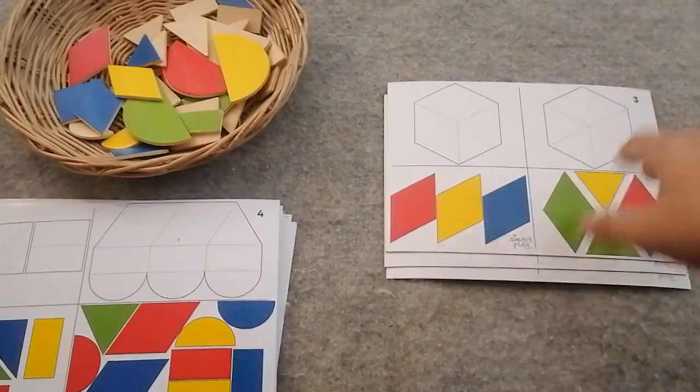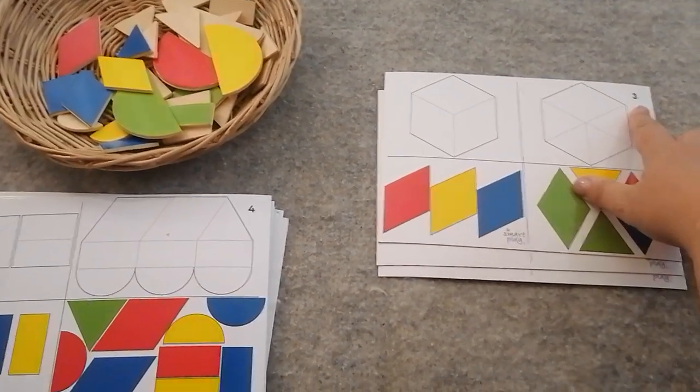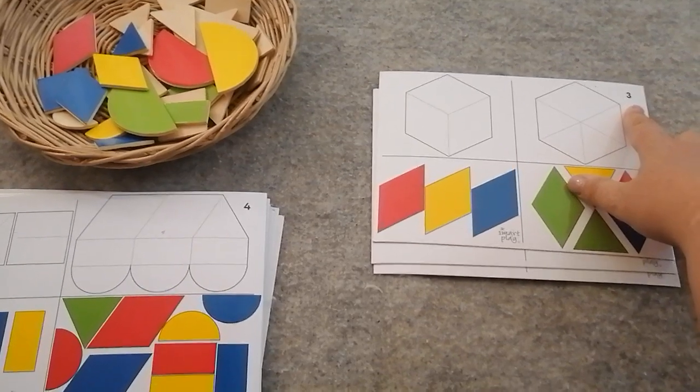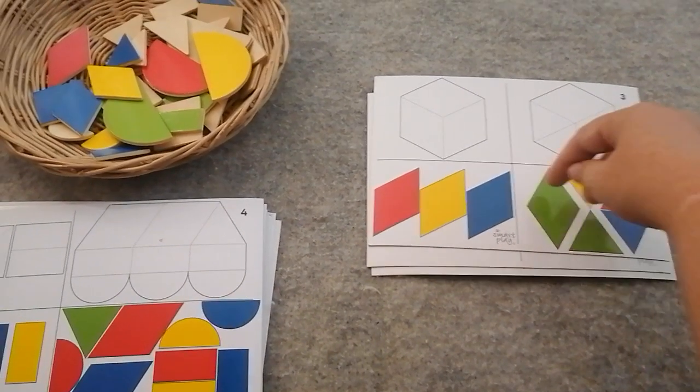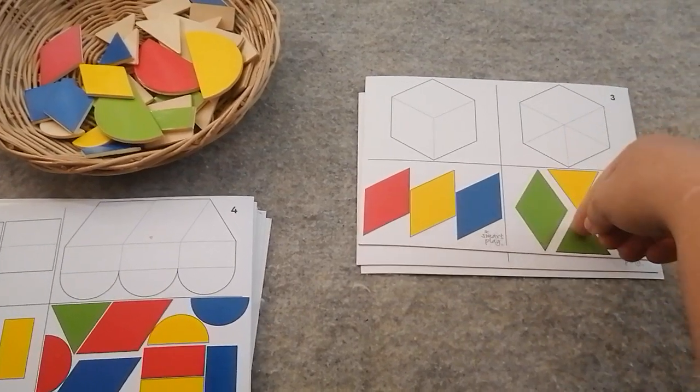Here's our tangram game again. Today we're doing card number three. Now I'm not going to be able to do card number three because my green diamond and my green triangle are missing from my set.